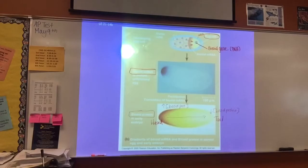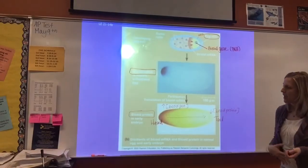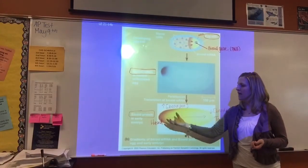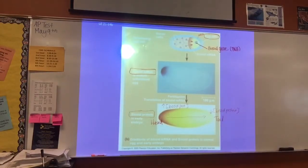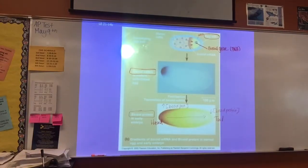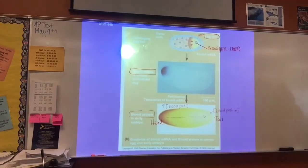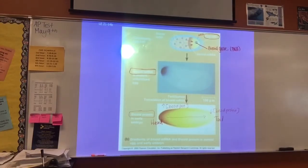Given the picture of the normal embryo, think about what the diagram would look like for the mutant fly that had two tail regions. What would that concentration gradient picture look like? Talk to the person next to you — what would that picture look like for the mutant with two tail regions?